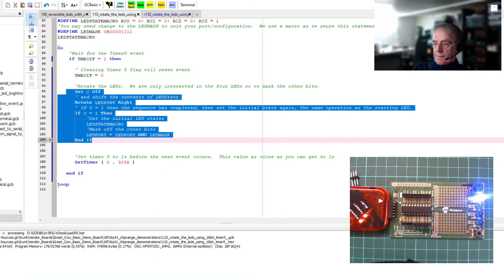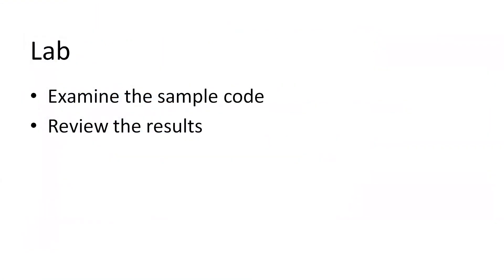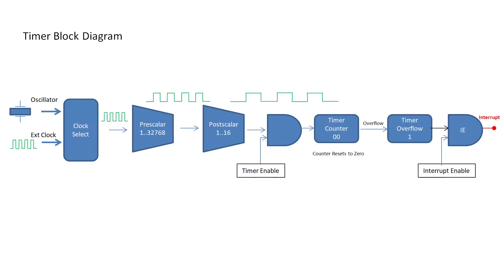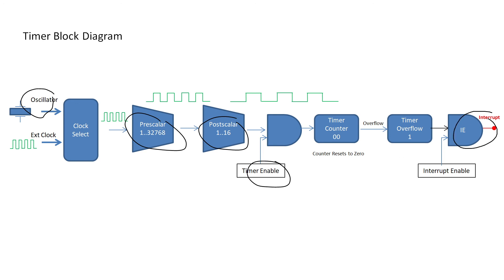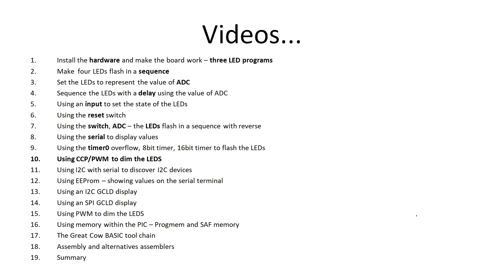Using timers in Great Cow BASIC is relatively simple — we've simplified it to the absolute essence. You select your oscillator, set your pre-scaler, set your post-scaler, enable it with Set Timer, and check the flags. It's extremely simple, nothing to be scared of. Enjoy Great Cow BASIC! Tomorrow we'll be covering CCP pulse width modulation.